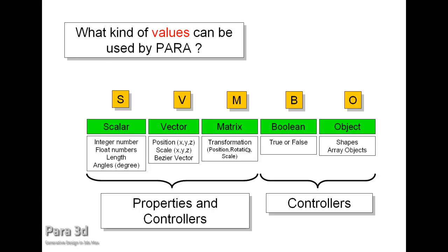Matrix represents the transformation of an object, which includes the rotation, position, and scale altogether. These three types are related to properties and controllers. Then the remaining two types are only available in controllers in Para3D: Boolean type, which represents true and false, and object, which means you can pass an object through a value to a controller. These objects can be shapes or different array members.